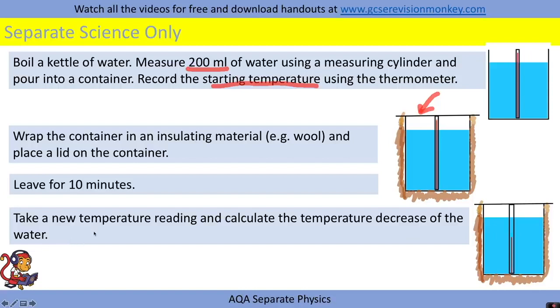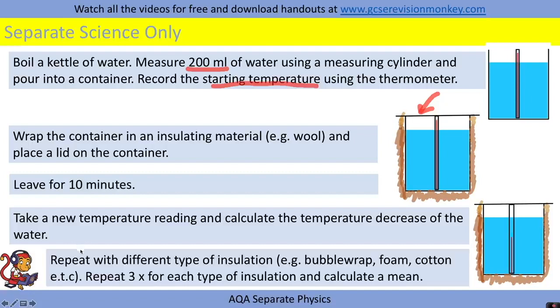The most effective insulator will be the one that has the smallest temperature decrease. Repeat with different types of insulation, for example bubble wrap, foam, cotton, etc. Repeat three times for each type of insulation and calculate a mean temperature decrease.